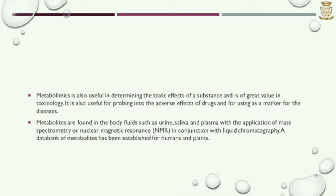Metabolomics is also useful in determining the toxic effects of a substance and is of great value in toxicology. It is also useful for probing into the adverse effects of drugs and for using metabolites as markers for diseases. Metabolites are found in body fluids such as urine, saliva, and plasma, with the application of mass spectrometry or NMR in conjunction with liquid chromatography. A data bank of metabolites has been established for humans and plants.